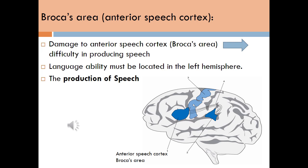We shall begin with Broca's area, also called the Anterior Speech Cortex. This area in the left hemisphere of the brain is responsible for the production of speech. Damage to the Anterior Speech Cortex or Broca's area can result in difficulty in producing speech. Language ability must be located in the left hemisphere.